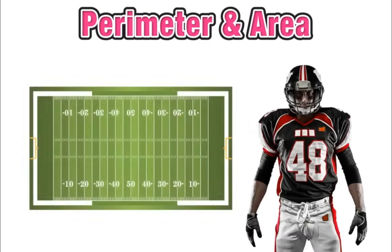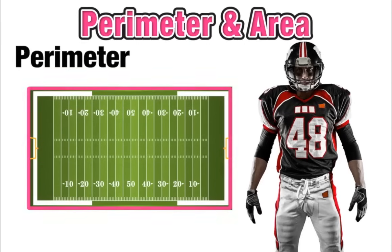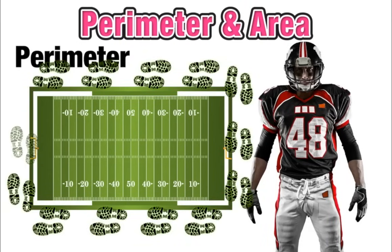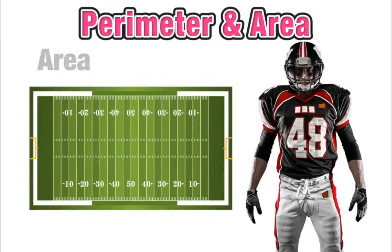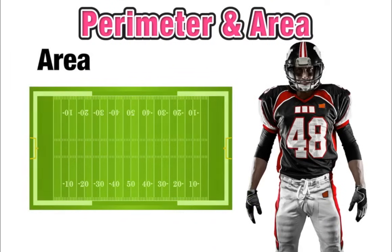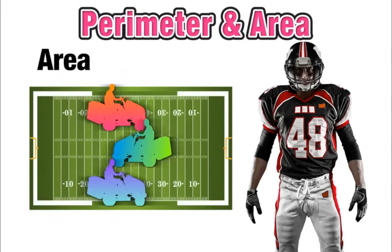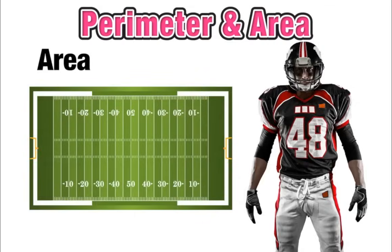On a rectangular football field, we can think of perimeter as how many footsteps it would take you to walk around the entire outside length of the field, while area would be like finding the total number of square feet that would have to be covered to mow the grass.